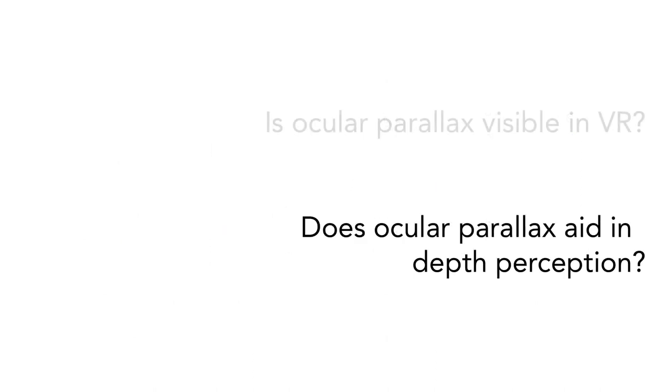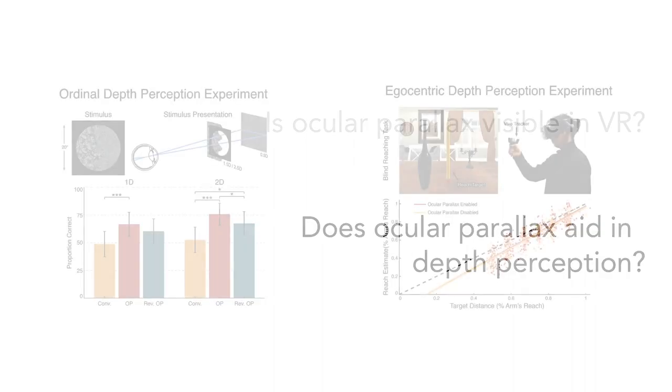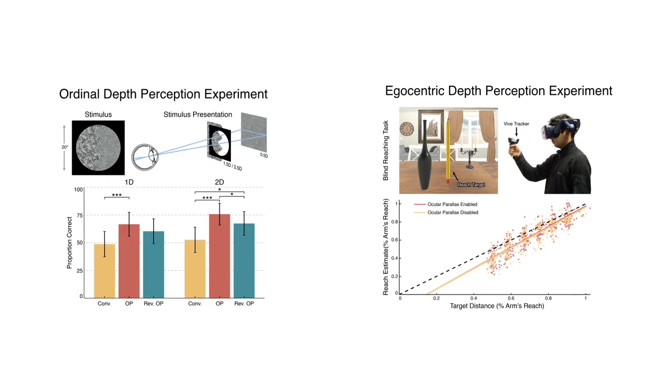In a series of experiments, we investigate our second question: Does ocular parallax rendering improve depth perception? With these experiments, we show that ocular parallax functions as an effective ordinal depth cue, helping users better distinguish the relative ordering of objects in a scene, but is unlikely to also act as a metric depth cue because it does not improve distance estimates to objects.